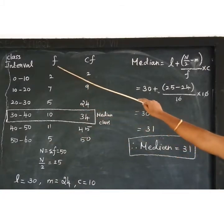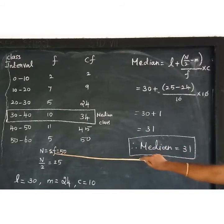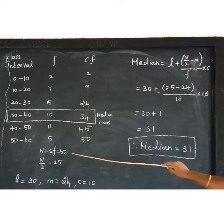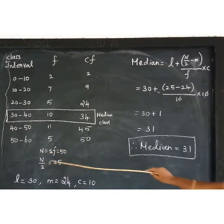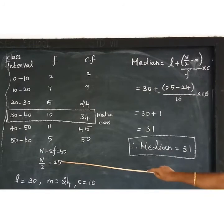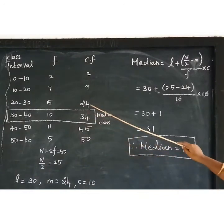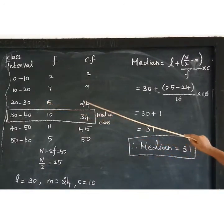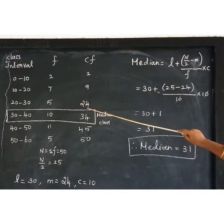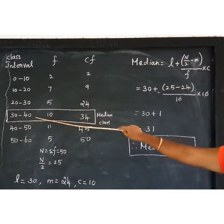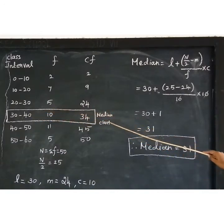Now add the frequency values — summation f, denoted by capital N. In this sum, n by 2 is 50 divided by 2, so n by 2 is 25. Now 25 lies in the class interval 30 to 40. For cumulative frequency 24, the class interval is 20 to 30, but 25 falls in the range 25 to 34, which lies in class interval 30 to 40. So 30 to 40 is called the median class.